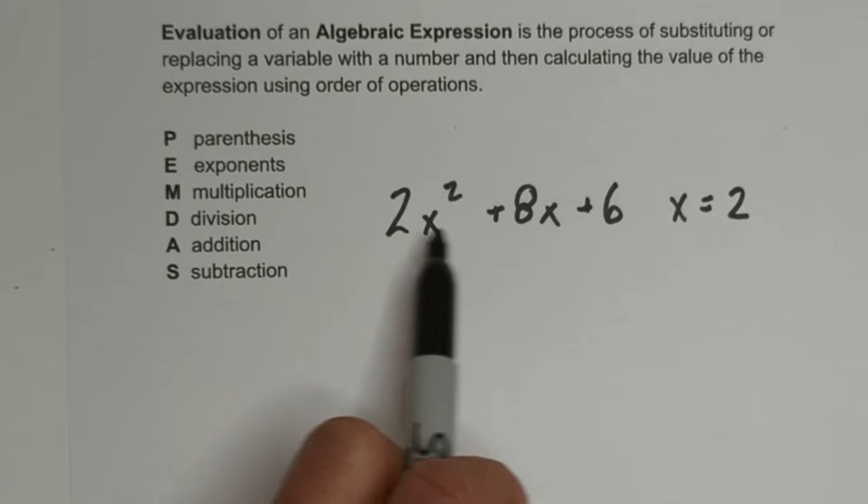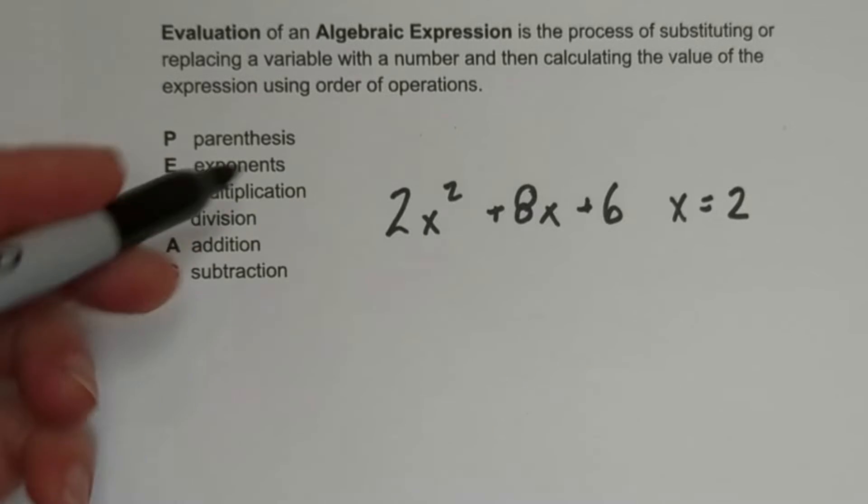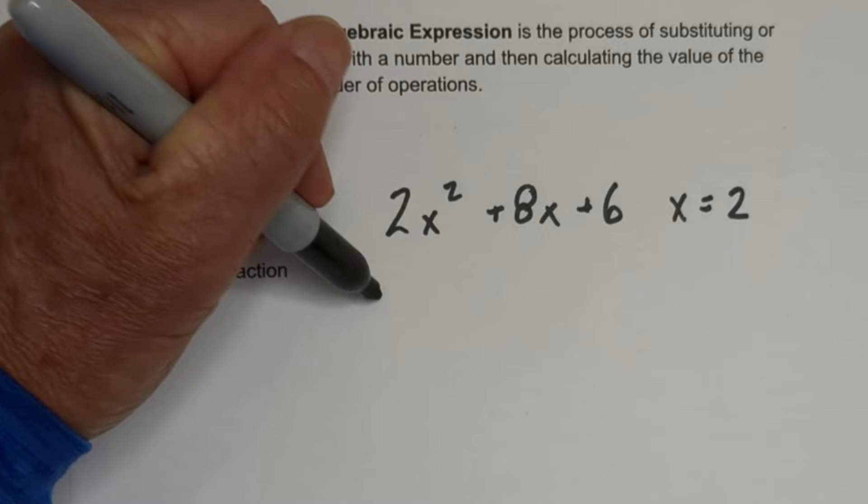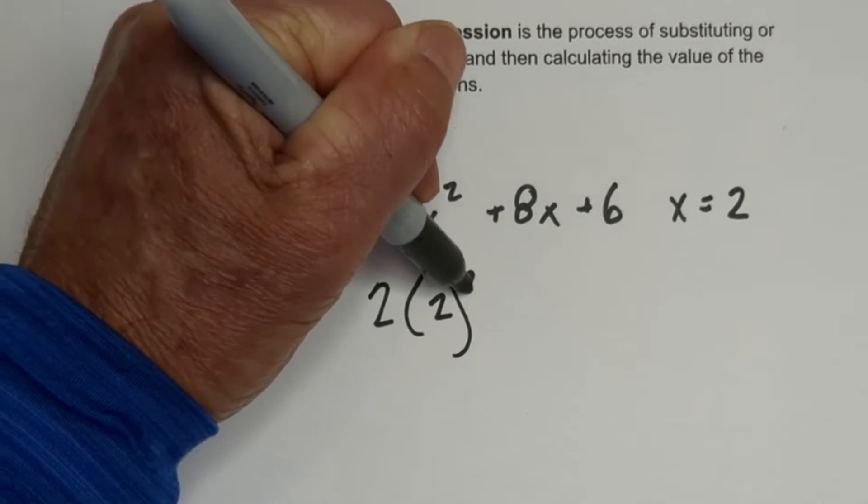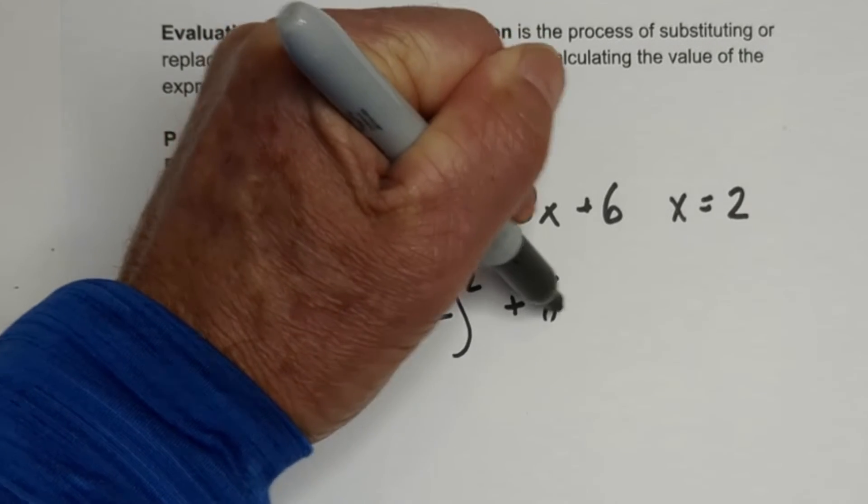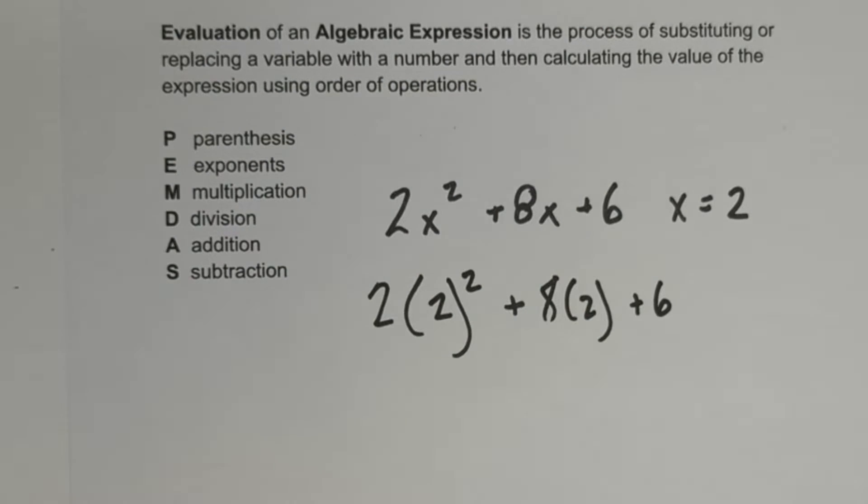So let's get started. We have 2x² + 8x + 6 and x = 2. So the first thing is let's go ahead and plug in x. So we have 2 times 2² plus 8 times 2 plus 6.